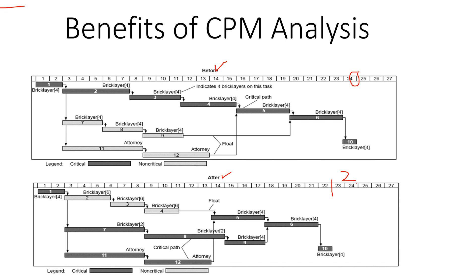Now we are going to analyze what process was used to save that time. Here you can see the examples of resources overlaid on the bar chart. For instance, task one has four bricklayers, task two has four bricklayers, task four has four bricklayers, and likewise task seven has four bricklayers.